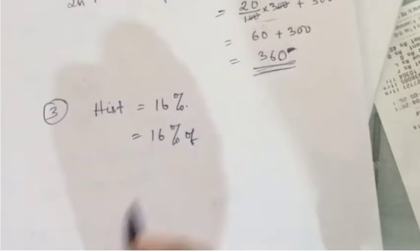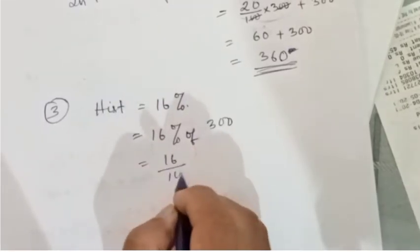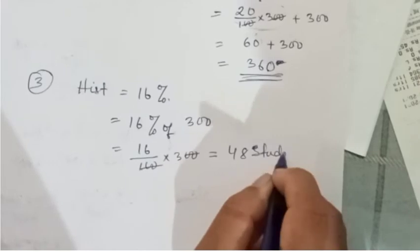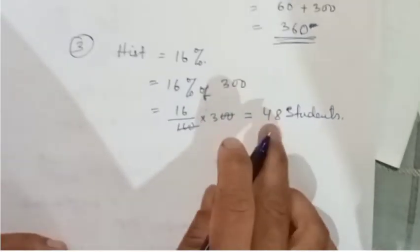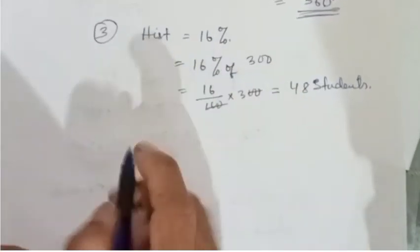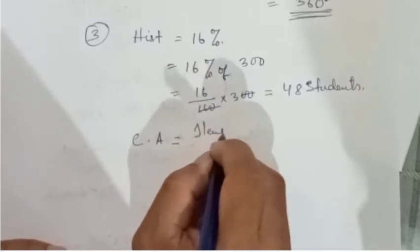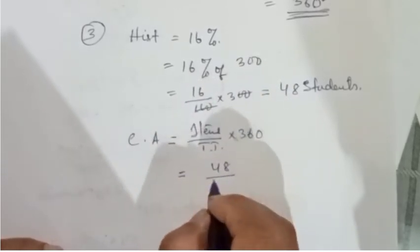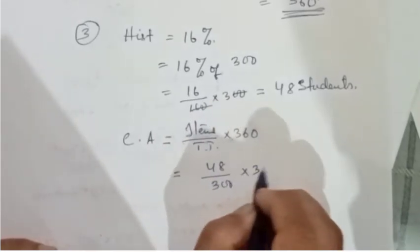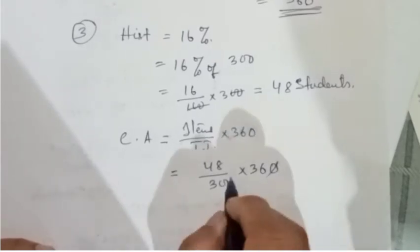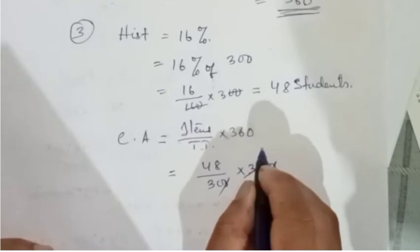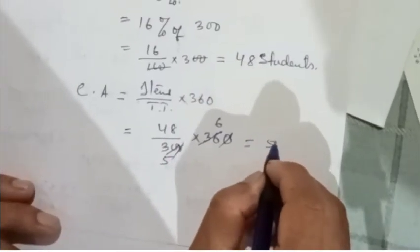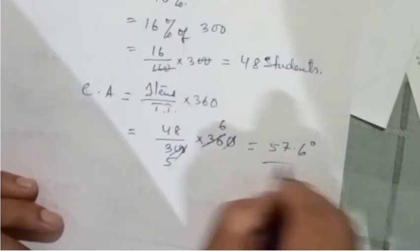The total number of students is 300, and History is sixteen percent. So 16 by 100 into 300 gives 48 students for History. The central angle is calculated as: number of students divided by total into 360°, which equals 48 by 300 into 360 = 57.6 degrees.